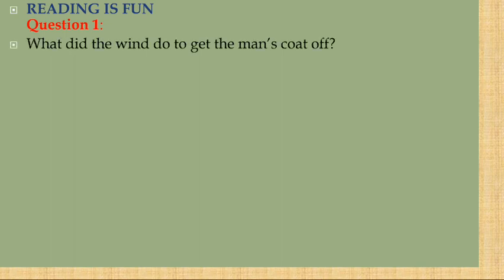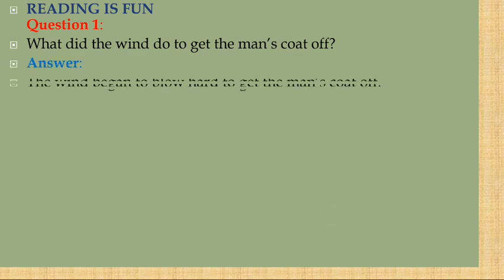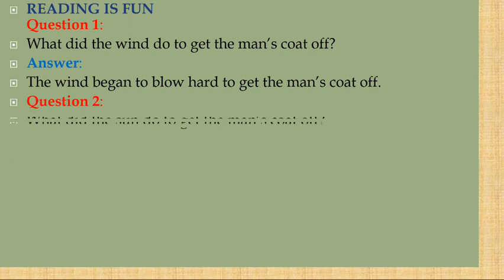Question 1: What did the wind do to get the man's coat off? Answer: The wind began to blow hard to get the man's coat off. Vyakti ka coat utarne ke liye wind ne jor-jor se, bahut teji se chalna shuru kiya.